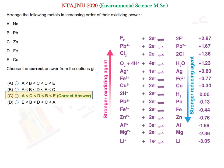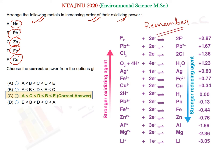The next question asks about oxidizing power. It asks to arrange the following metals in increasing order of oxidizing power: sodium, lead, zinc, iron, copper. You should remember the concepts of oxidizing power, reducing power, oxidizing agent, and reducing agent.